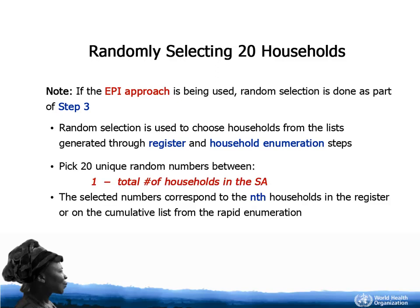From this list, 20 households should be randomly selected for interview by picking 20 unique random numbers between 1 and the total number of households in the area. Random number tables and explanations can be found in Annex 6 of the SCT portion of the Preventative Chemotherapy Monitoring and Evaluation Guidelines and in the videos below.